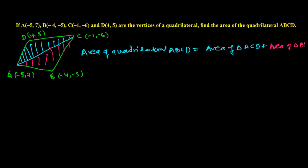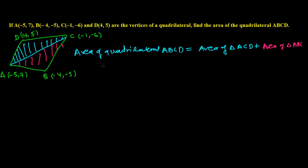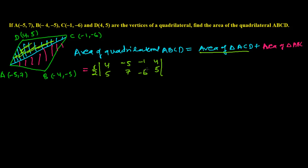Let's find both areas. For triangle ACD, we'll use the cross-multiplication (shoelace) method since it's faster. The coordinates are: D(4, 5), C(-1, -6), A(-5, 7), and we repeat the first coordinate at the end: (4, 5). For triangle ABC, it's one-half with coordinates: A(-5, 7), B(-4, -5), C(-1, -6), and repeated: (-5, 7).